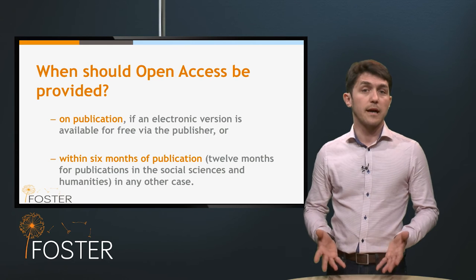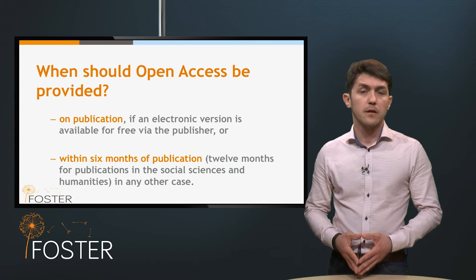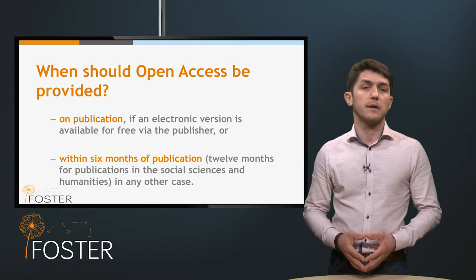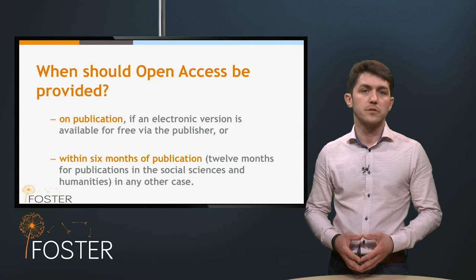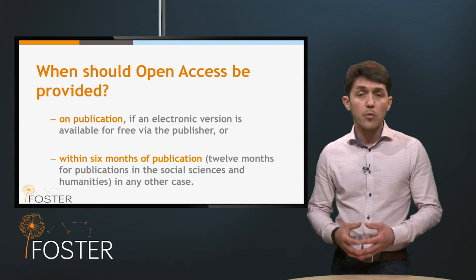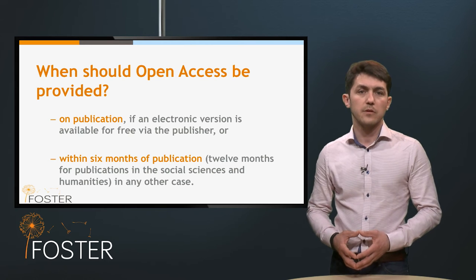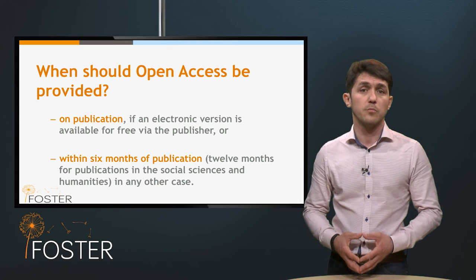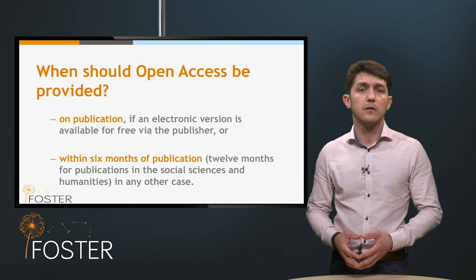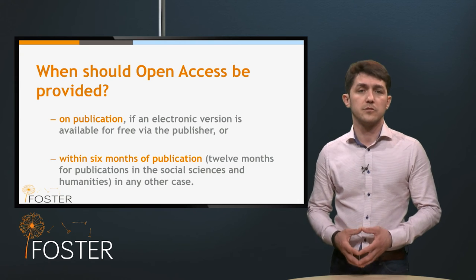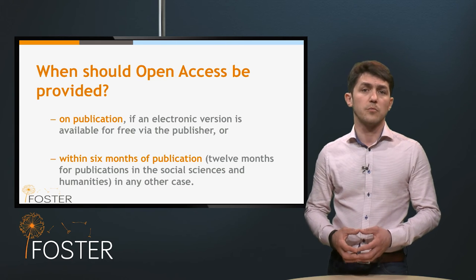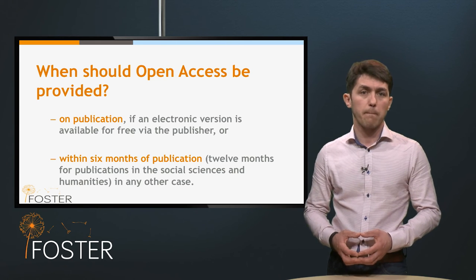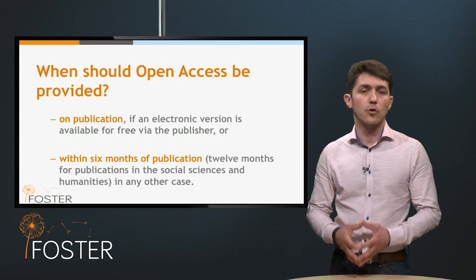When should open access be provided? The beneficiary must ensure open access to the deposited publications via the long-term repository at the latest on publication, if an electronic version is available for free — as in the case of open access journals — or within six months of publication, which could be up to 12 months for social sciences and humanities, in the case of non-open access journals.